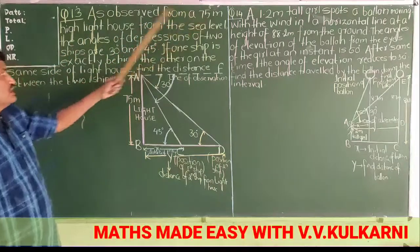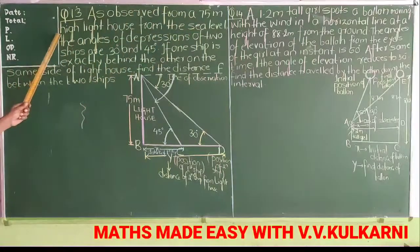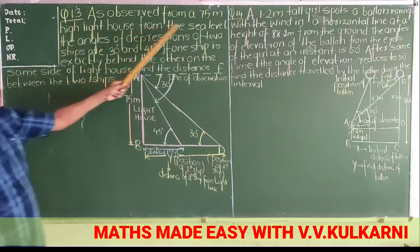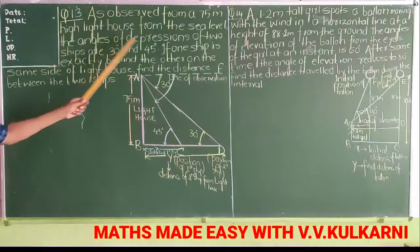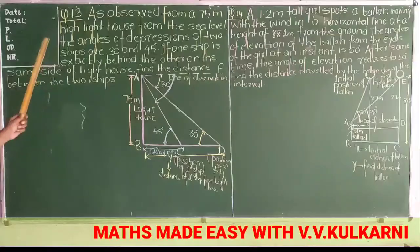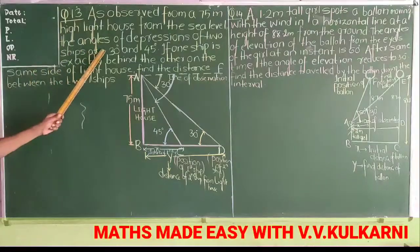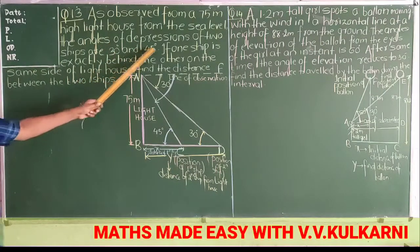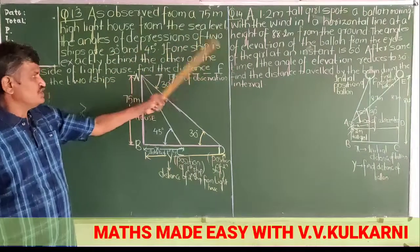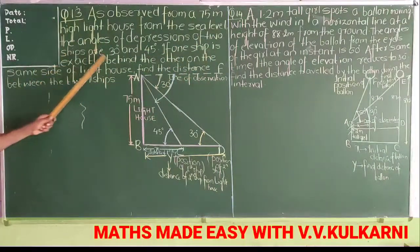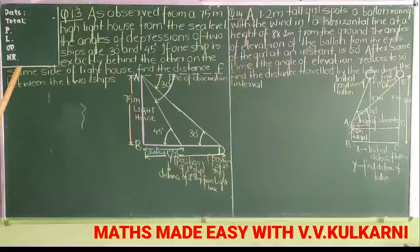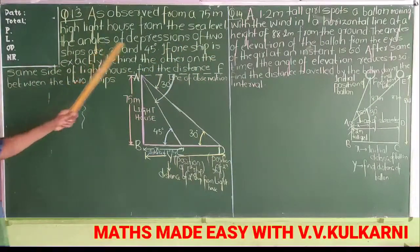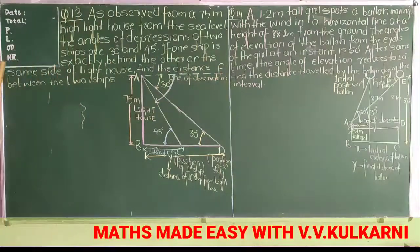As observed from a 75 meter high lighthouse from the sea level, the angles of depression of two ships are 30 degrees and 45 degrees. If one ship is exactly behind the other on the same side of the lighthouse, find the distance between the two ships.